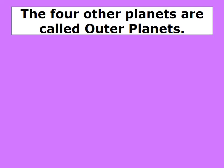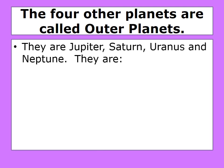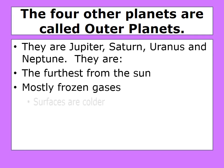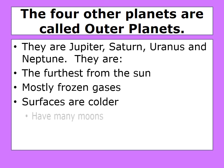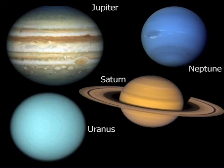The four other planets are called outer planets. They are Jupiter, Saturn, Uranus, and Neptune. They are furthest from the sun, mostly frozen gases, their surfaces are colder, and they have many moons. These are the outer planets.